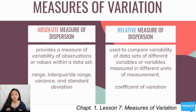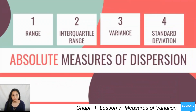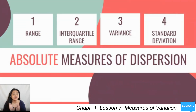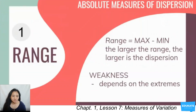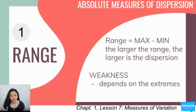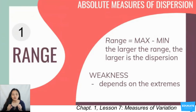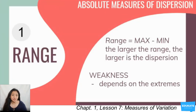The range is the maximum value in the data set minus the minimum value. The larger the range, the larger is the dispersion of your data. Similar to how the mean has the weakness of outliers, the range has the weakness of extreme values — if you have an extreme value, it may suggest the data has a large range.